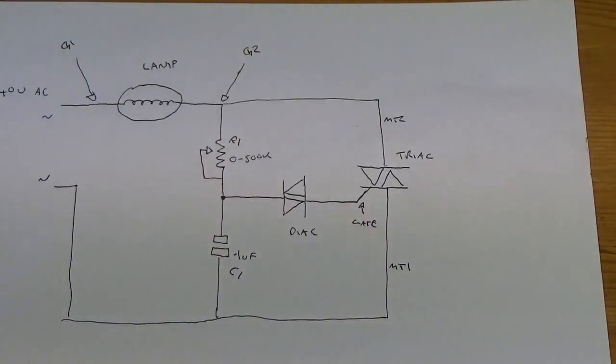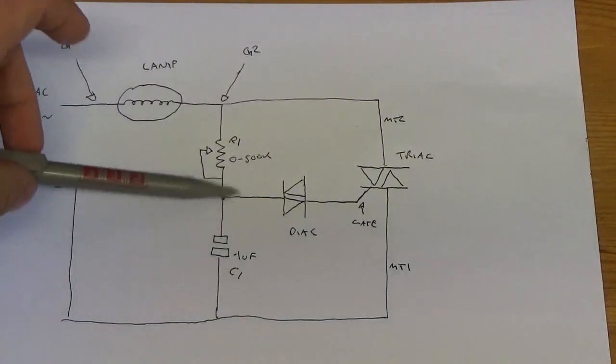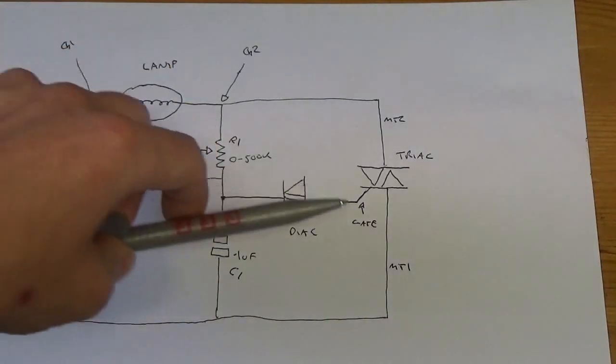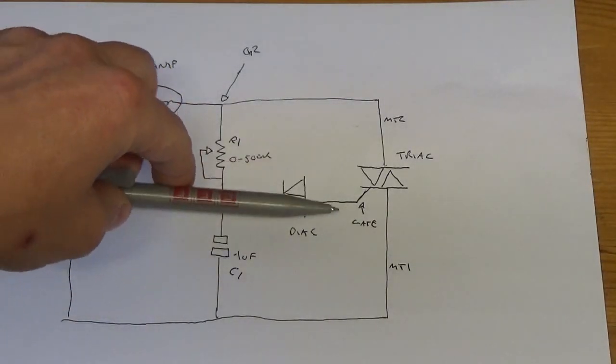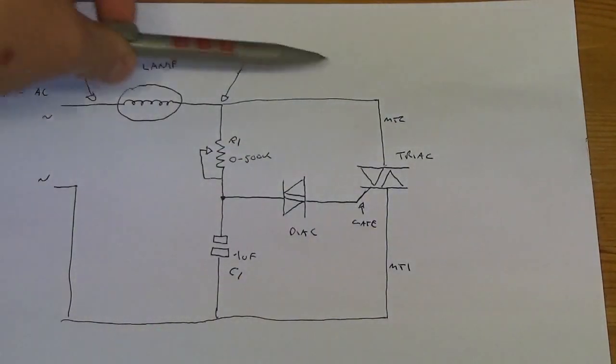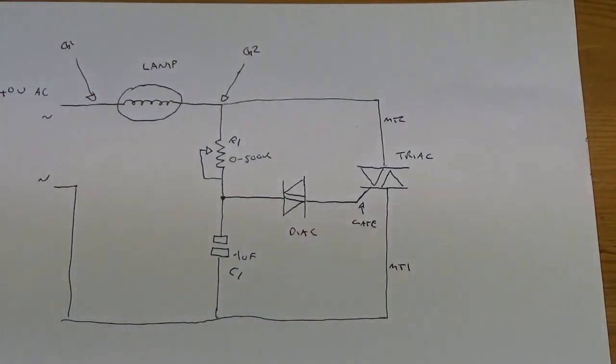One thing to keep in mind: once the diac is triggered, so once it reaches its 30 volt threshold which it's getting from the RC circuit there, it snaps on extremely quickly. I'll show on the scope later. The gate starts conducting, thus the triac starts conducting, and the triac is going to conduct until it reaches zero volts, and that's in both halves.